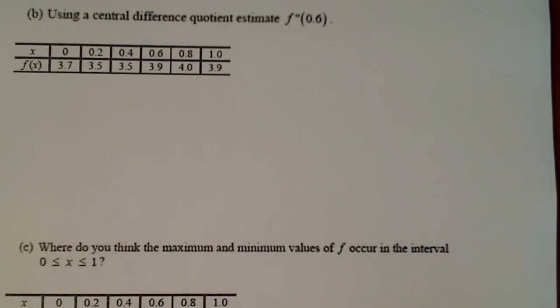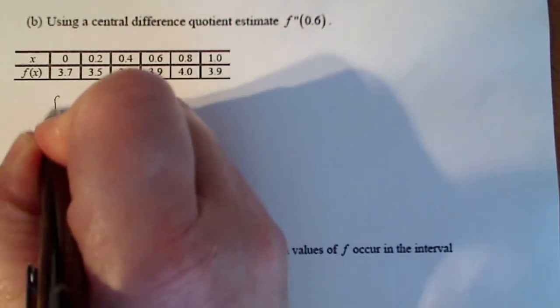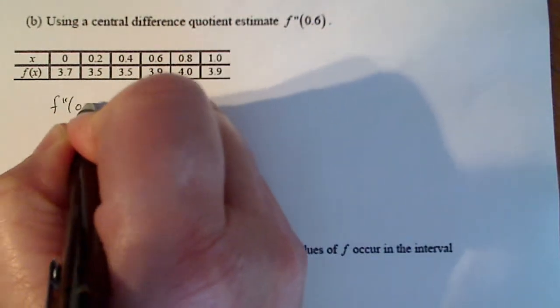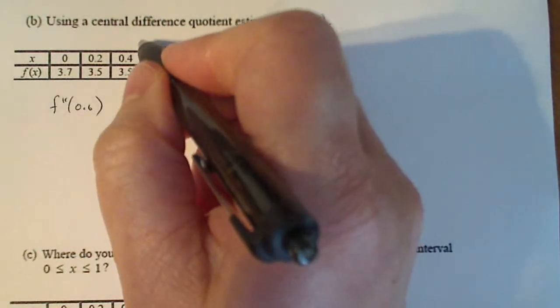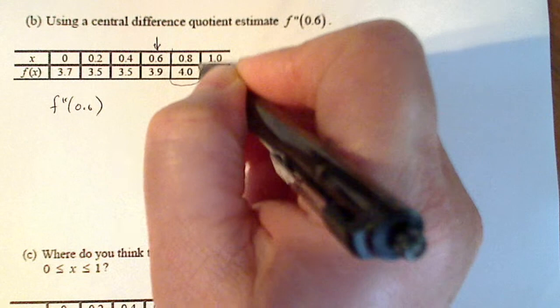Using the central difference quotient estimate f double prime of 0.6. So f double prime of 0.6. I'm going to think the same way. Here's 0.6 right here. I'm going to still use these two numbers around here.